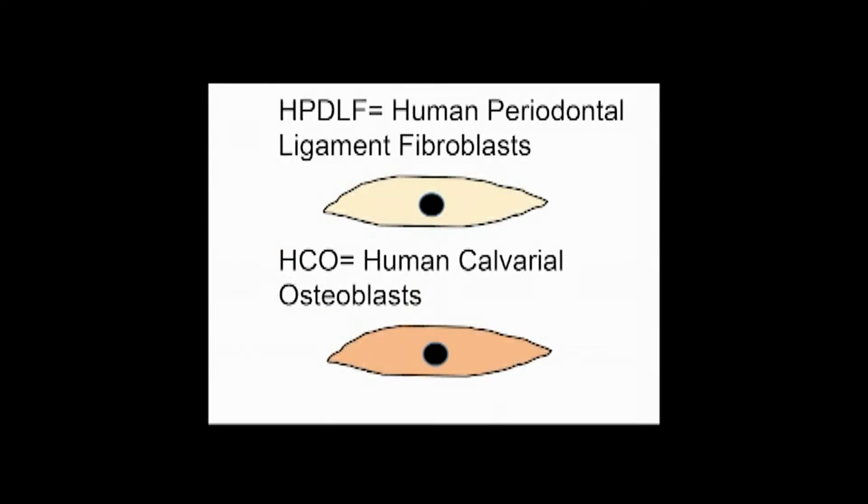Based on these findings, we investigated further how periodontal tissue cells, such as the human periodontal ligament fibroblasts and human calvarial osteoblasts, respond to the different self-assembling peptide hydrogels.